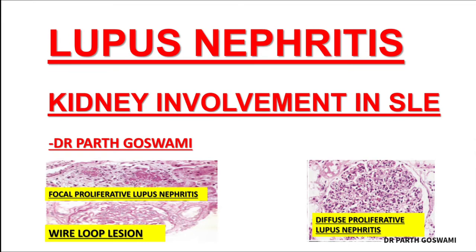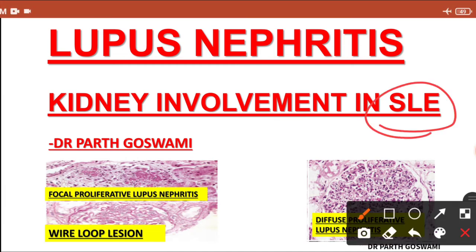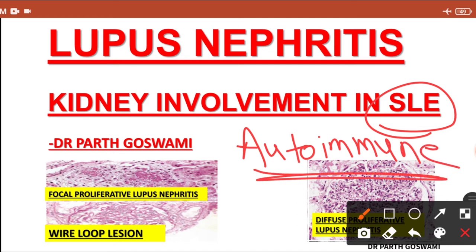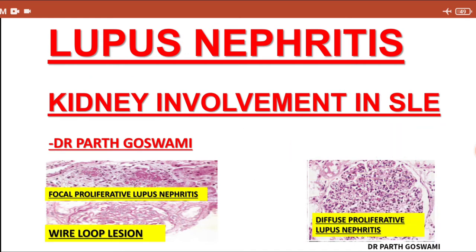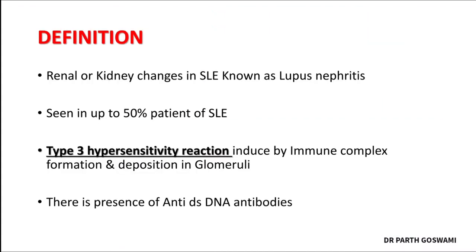Hello everyone, myself Dr. Parth Goswami, and today I am going to teach you about lupus nephritis. Systemic lupus erythematosus is an autoimmune disorder that can affect multiple organs in our body. Multiple systems are involved, and one of them is the kidney. The kidney involvement in SLE is known as lupus nephritis.